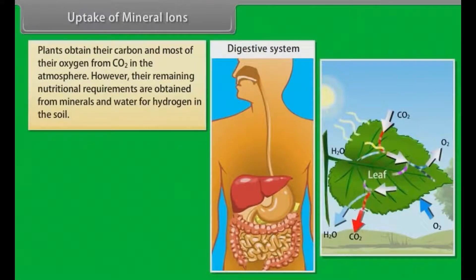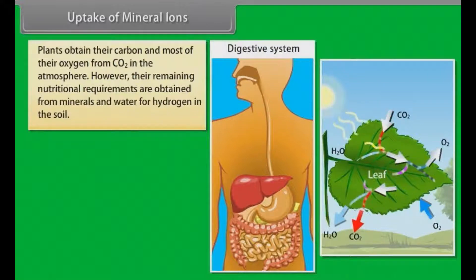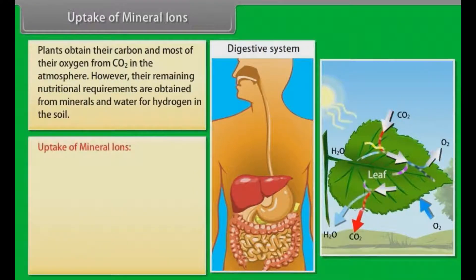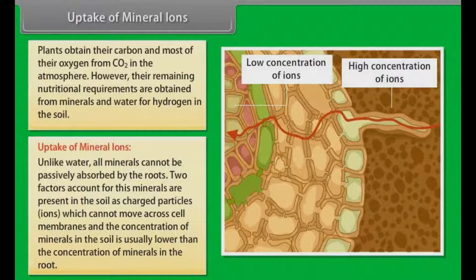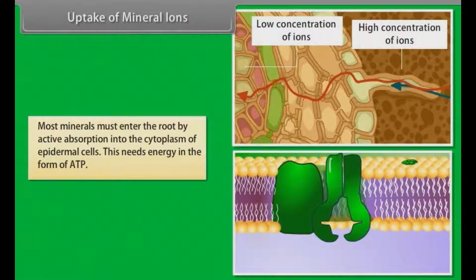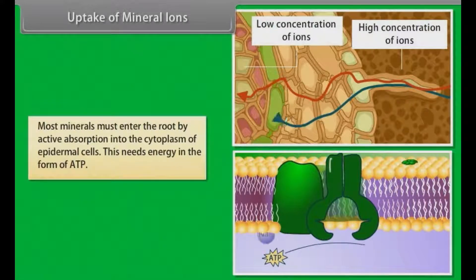Uptake of mineral ions. As we all know, plants do not have teeth and digestive organs like us. They obtain their carbon and most of their oxygen from CO2 in the atmosphere. However, their remaining nutritional requirements are obtained from minerals and water for hydrogen in the soil. Unlike water, all minerals cannot be passively absorbed by the roots. Two factors account for this: minerals are present in the soil as charged particles or ions, which cannot move across cell membranes, and the concentration of minerals in the soil is usually lower than the concentration of minerals in the root. Therefore, most minerals must enter the root by active absorption into the cytoplasm of epidermal cells.